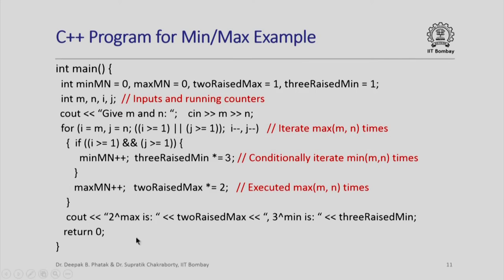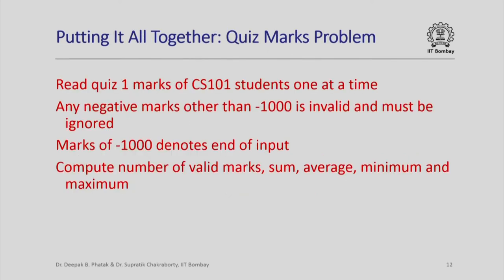Here is how the entire program looks with comments added for readability. Now let us look at a second example: a variant of the quiz marks problem. We are required to read quiz 1 marks of CS 101 students one at a time. Any negative marks other than -1000 are considered invalid and must be ignored. If the user enters -1000, that denotes the end of input, and we then compute the count of valid marks, sum, average, minimum, and maximum and print them out.